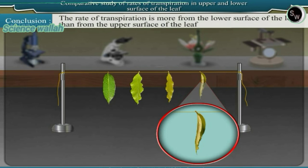Conclusion: The rate of transpiration is more from the lower surface of the leaf than from the upper surface of the leaf.